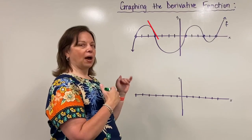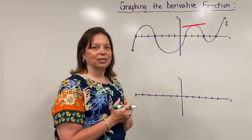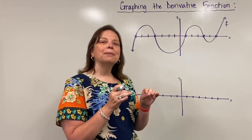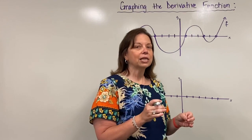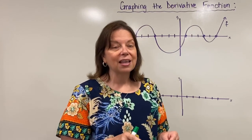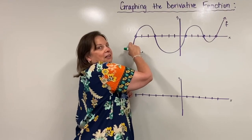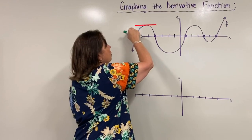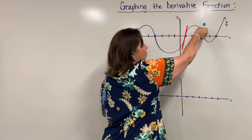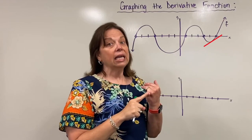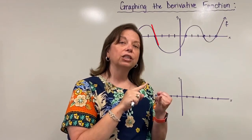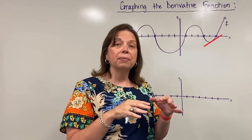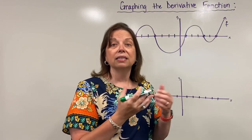Let's imagine that you have a tangent line kind of swooping around this particular function, and we want to look for some key places where that tangent line is zero. I'm going to move that tangent line from left to right and swoop around the graph like a little roller coaster. You'll notice the slope of the tangent line is changing from negative to positive at different times, and there are some key places where that slope is in fact zero.